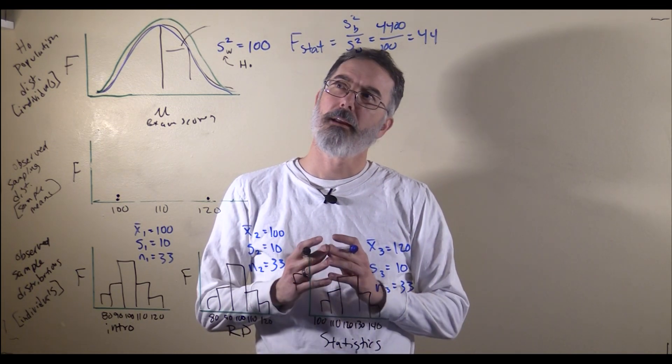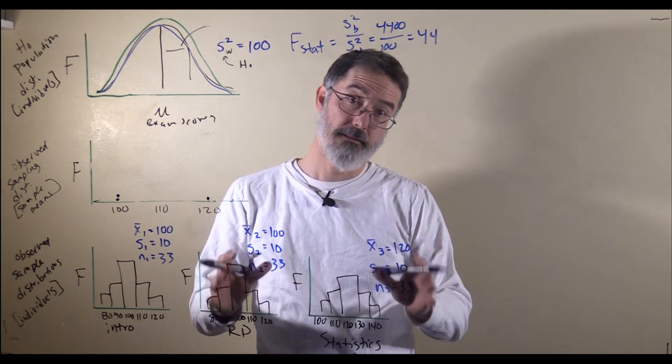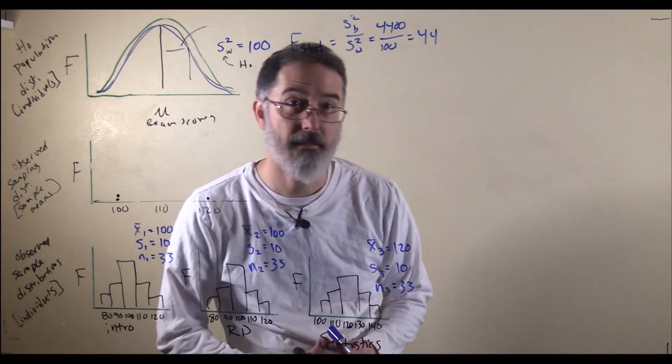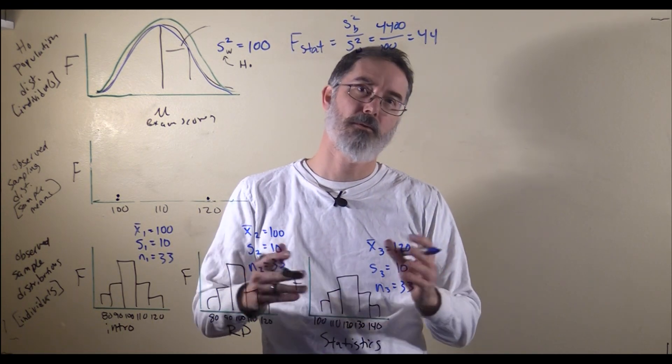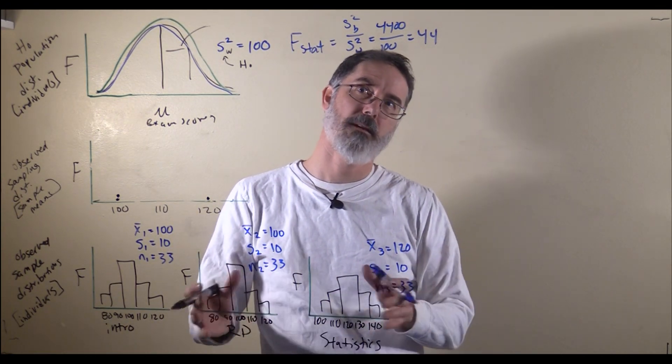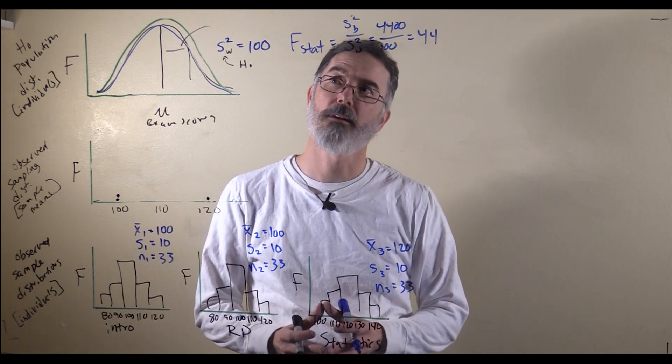If you do an ANOVA and it is statistically significant, if you reject the null hypothesis, then you have to do a post-hoc test to tell which of the many means are different from one another.